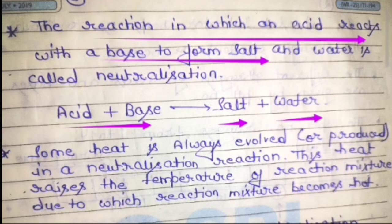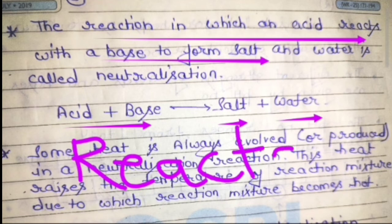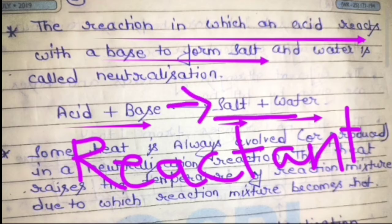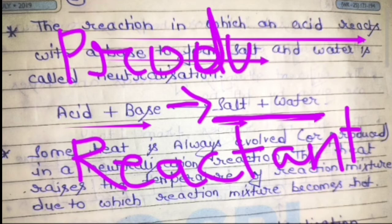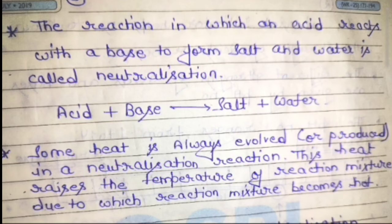In this chemical reaction, acid and base are written on the left side. The substances on the left side are called reactants — they react with each other. On the right-hand side of the arrow, salt plus water is written — that is the product. So in any reaction, reactants react with each other and the formation of product takes place. In a neutralization reaction, the reactants are acid and base, whereas the product is salt and water.